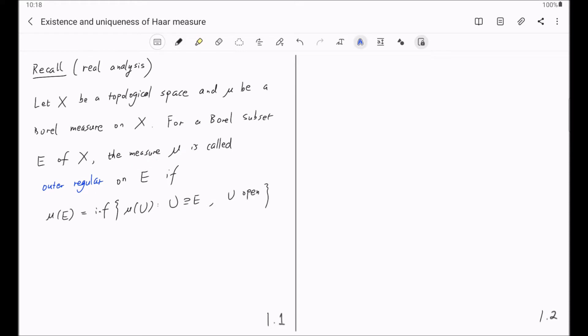And this measure mu is called inner regular on E if mu of E is the supremum of all the mu of K's, where K is a compact subset containing E.